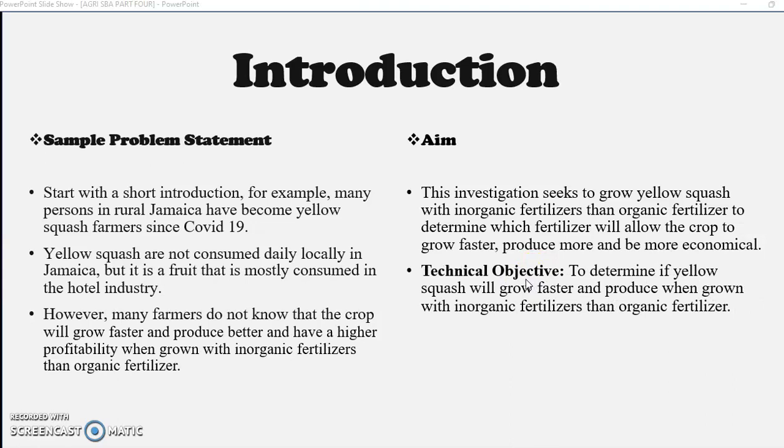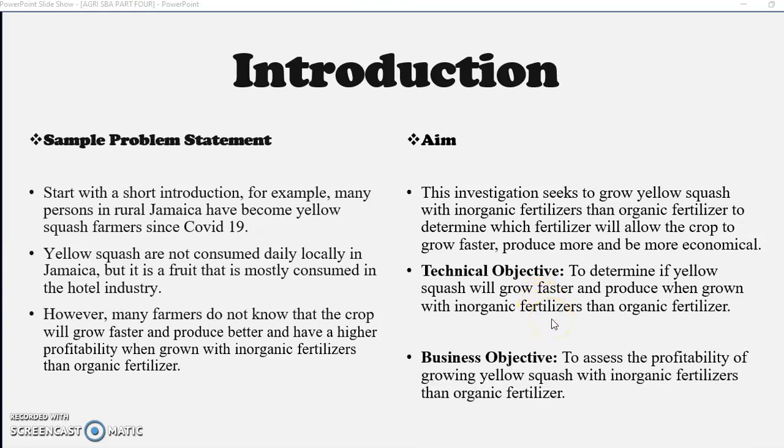You also need a technical objective, so you're going to determine if yellow squash will grow faster and produce more when grown with inorganic fertilizer than organic. Your business objective now will have to do with your profitability, so you'd want to find out which fertilizer will give you a better profit when used to grow the fruit or the crop.